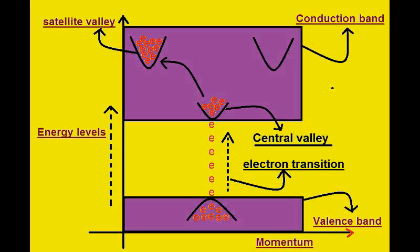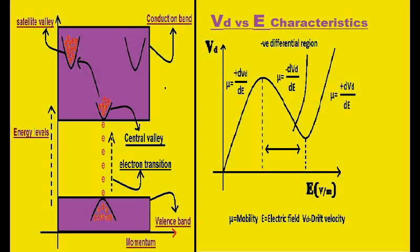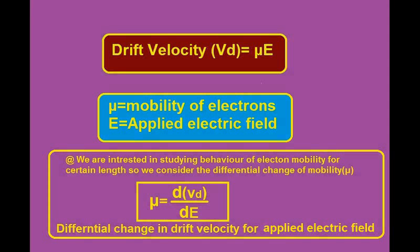To understand the operation, we compare the energy versus momentum diagram of gallium arsenide with its drift velocity (VD) versus applied electric field (E) graph. From basic semiconductor physics, drift velocity VD equals mobility (μ) times electric field (E).